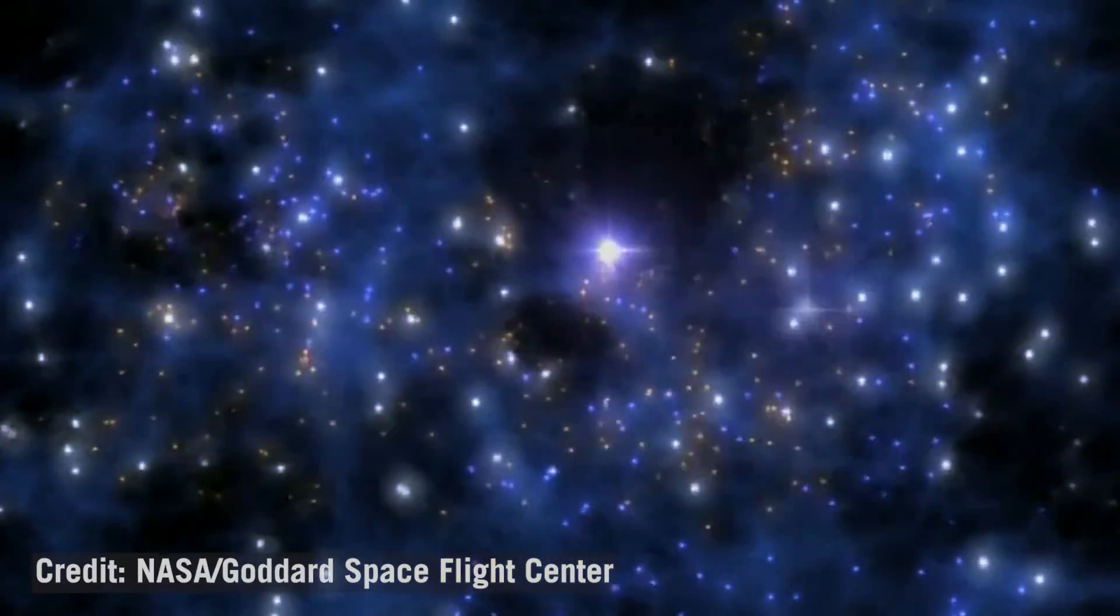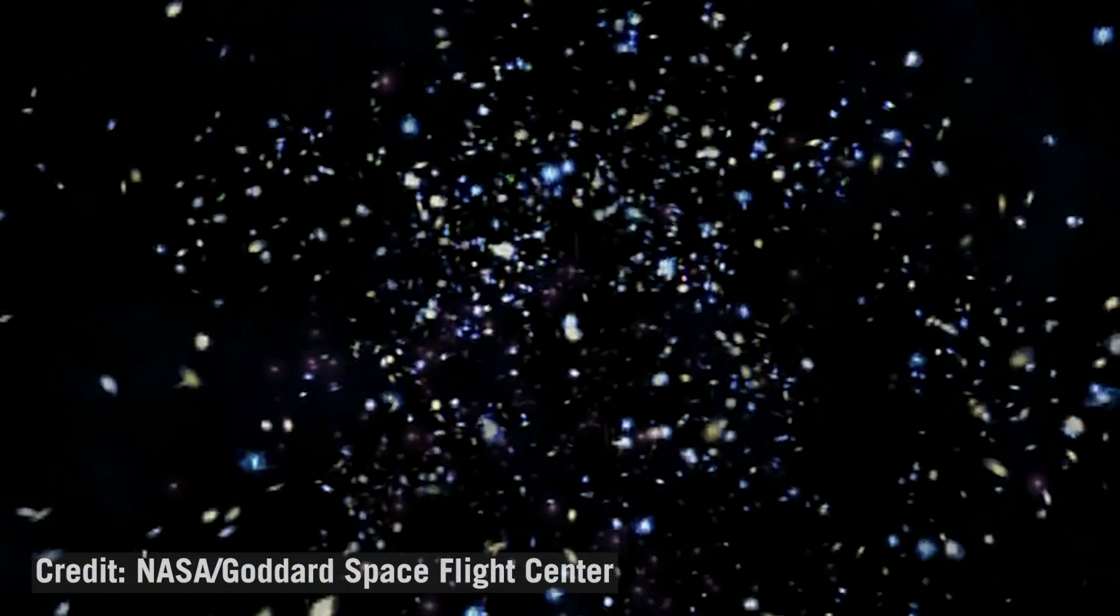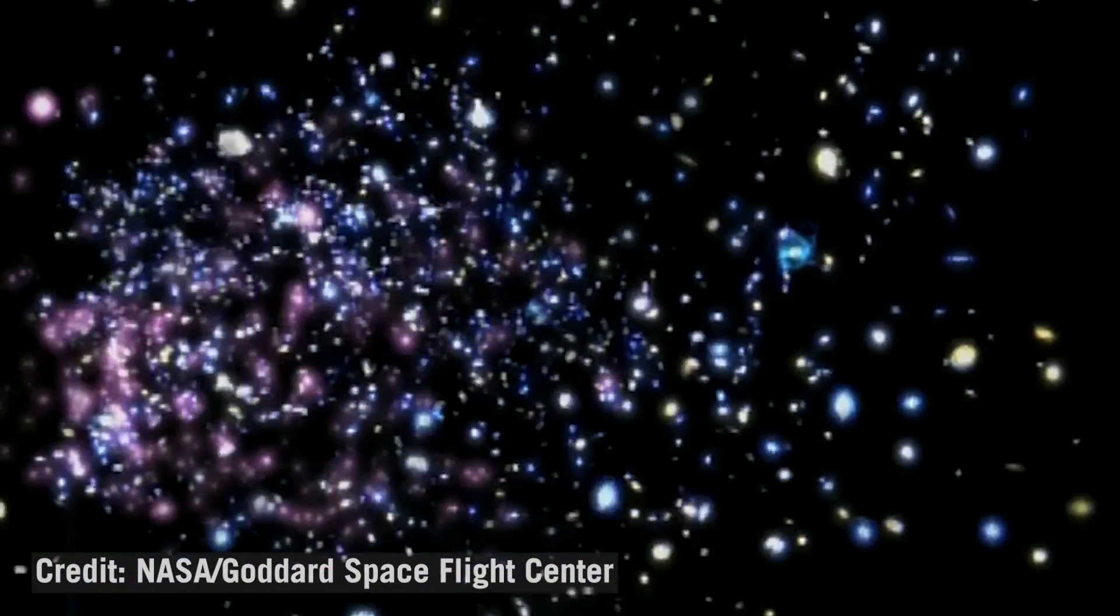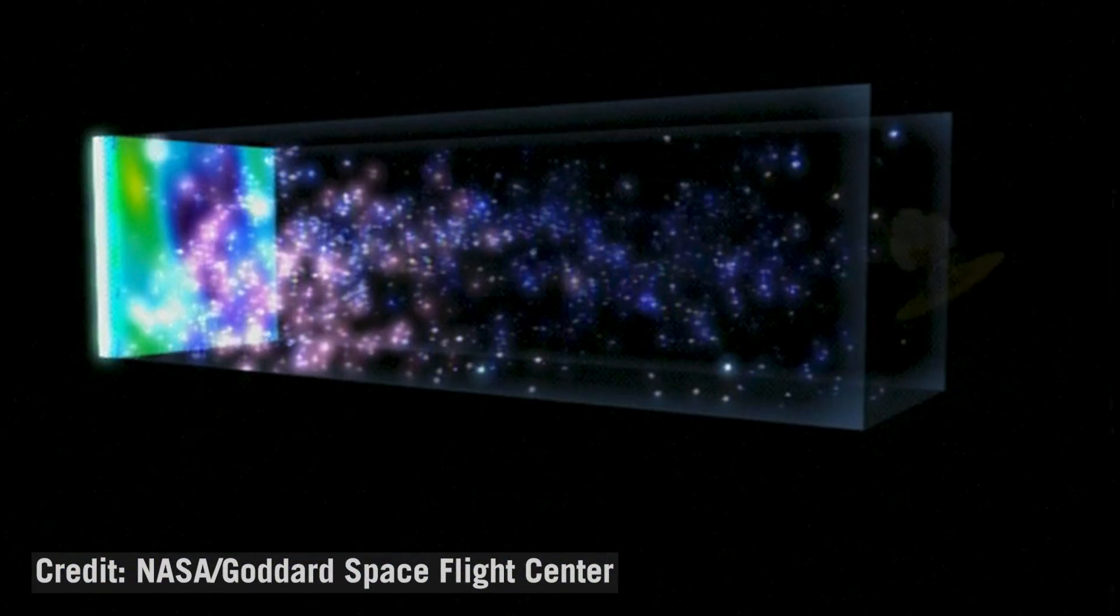A lot of what we can learn from the CMB we get by connecting what we're seeing in the very early universe to what the universe looks like today. And by comparing the universe today to what it looked like very early on, we can learn a lot of things about the universe as a whole. So one thing you can measure by looking at the CMB is how old the universe is. Some of our most precise measurements of the age of the universe that we know to around a percent precision, we learn from looking at the CMB.